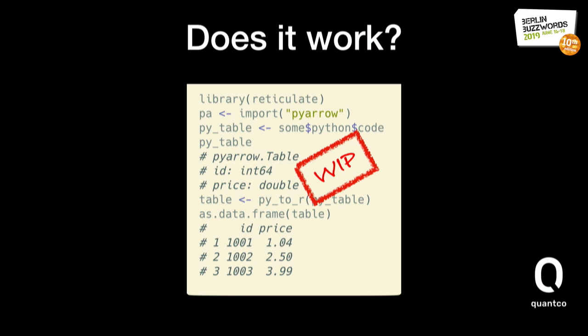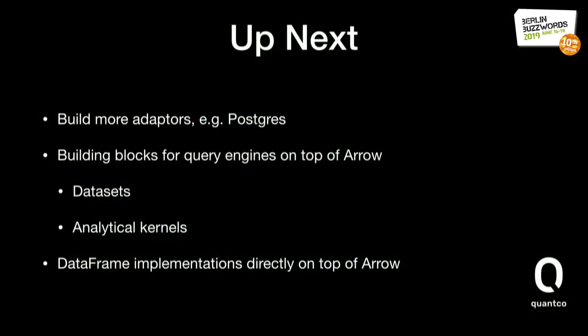That's roughly the current state of Arrow. We have integration between different languages, and we're testing that all languages have the same memory layout so there are no surprises. We're building out the ability to pass pointers from one language to another — either by sharing memory between processes, or by handing pointers between different language runtimes in the same process.